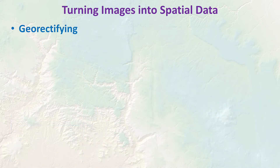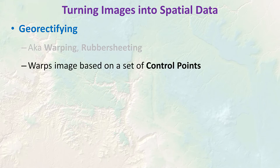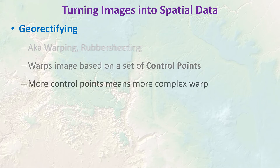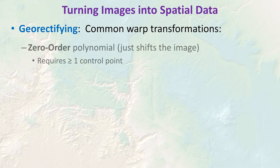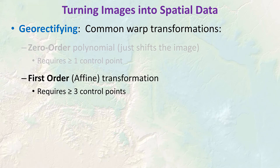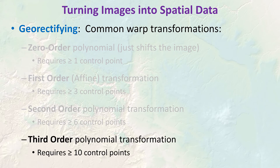Geo-rectifying is sometimes referred to as warping or rubber sheeting. You warp the image based on a set of control points — we know where control points are on the landscape and where they appear on the image, and this lets us bend the image to fit. More control points allow more complex warps. A zero-order transformation just shifts the image and requires only a single control point — this is equivalent to geo-referencing. With three or more points we can do a first-order affine transformation; more than six points gives second order; ten or more points gives third order.